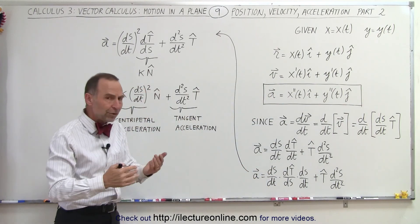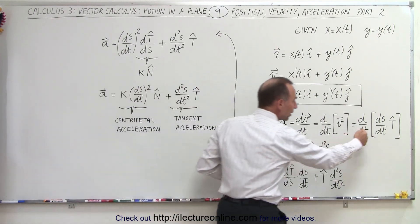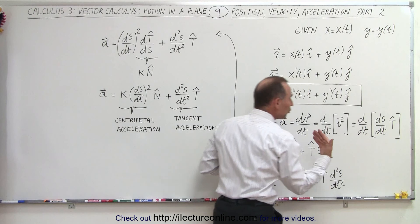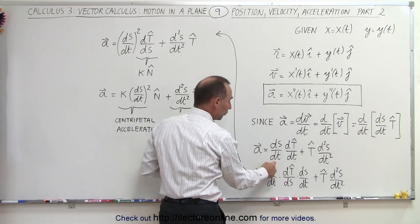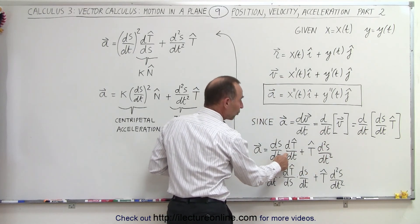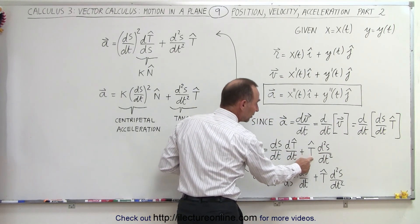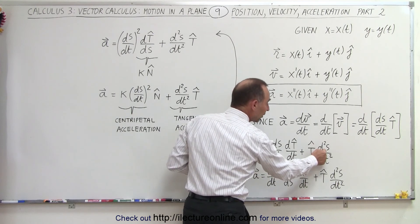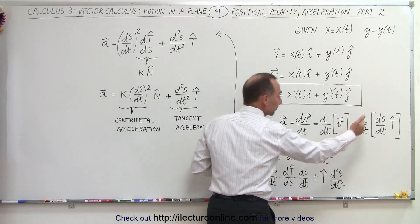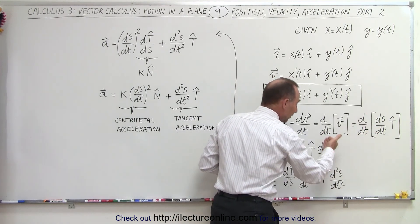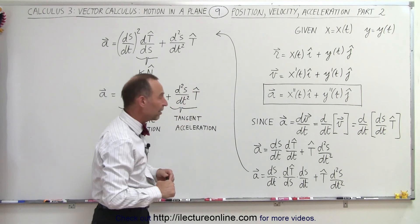So if you do that, remember here we have a product, so we need to use the product rule. It's the first times the derivative of the second plus the second times the derivative of the first. Of course the derivative of ds/dt is the second derivative of s with respect to time.